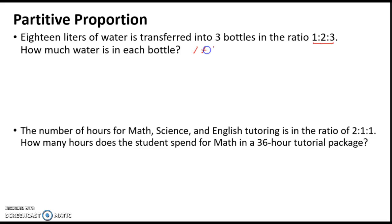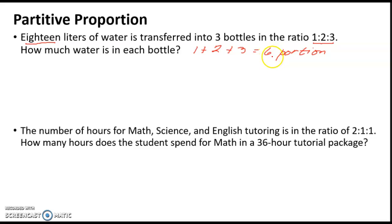1 plus 2 plus 3 equals 6 portions total. So the 18 liters of water is divided into 6 portions. That means 18 divided by 6 portions equals 3 — so one part is equal to 3 liters.